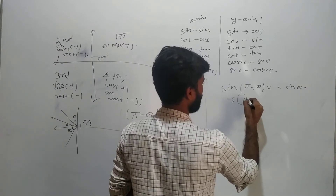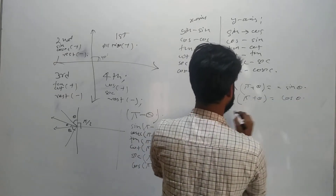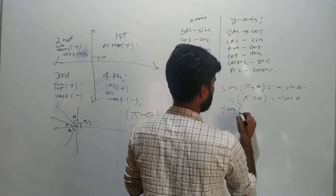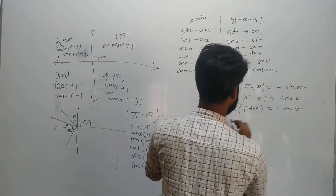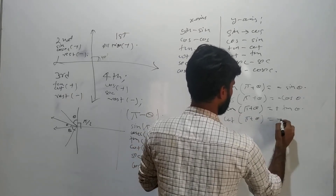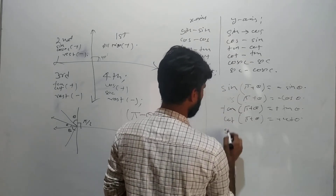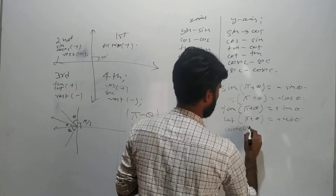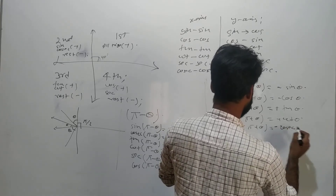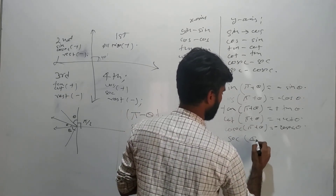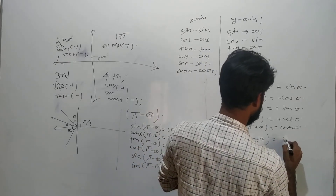Cos(π + θ) = −cos θ, negative in the third quadrant. Tan(π + θ): tan will remain tan, and this is positive in the third quadrant, so tan(π + θ) = +tan θ. Cot(π + θ) = +cot θ, also positive. Cosec(π + θ): cosec will remain cosec, so cosec(π + θ) = −cosec θ, negative. Sec(π + θ): sec will remain sec, so sec(π + θ) = −sec θ, negative.